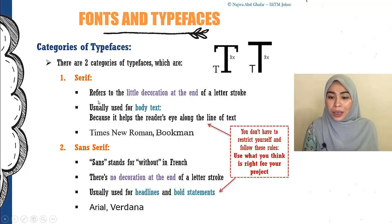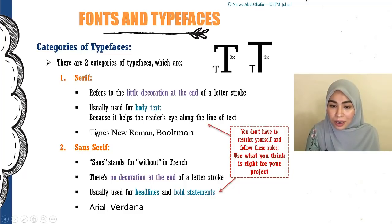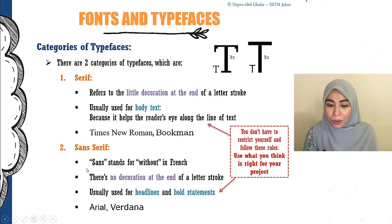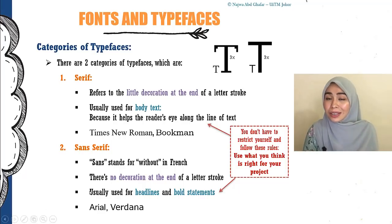An example of serif is Times New Roman or Bookman — the letters have some sort of decoration, you can see it on T, I, and M. With sans serif, like Arial or Verdana, each of the letters does not have decoration — it's cut off, the letters are blocked.